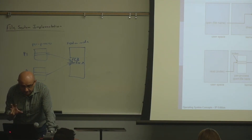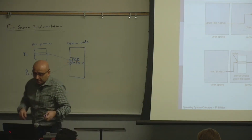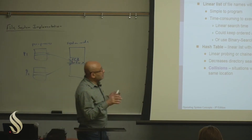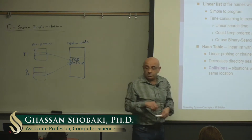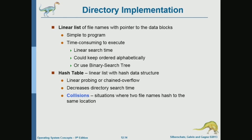Since the directory entry maps a file name to a corresponding file number, how is that implemented? The directory could be implemented as a linear list, but the search would be slow. You can sort that list alphabetically by file name and do a binary search. Another way is to use a hash table to implement the directory and speed up the search for a file name within a directory.